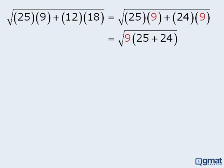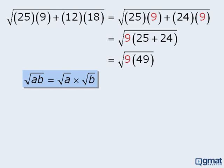From here, 25 plus 24 equals 49, and we now have the square root of the product of two perfect squares. At this point, we can apply this rule and rewrite our square root as the product of two separate square roots. Finally, when we evaluate this, we get 21.